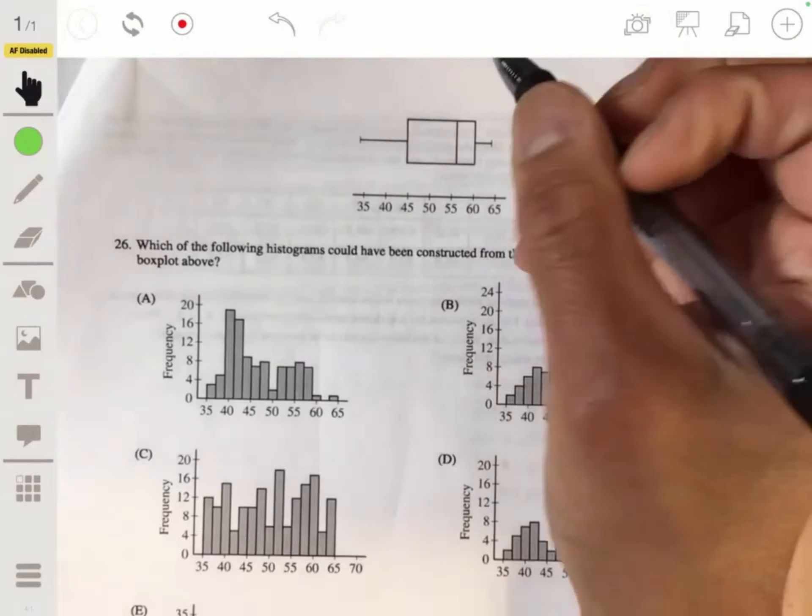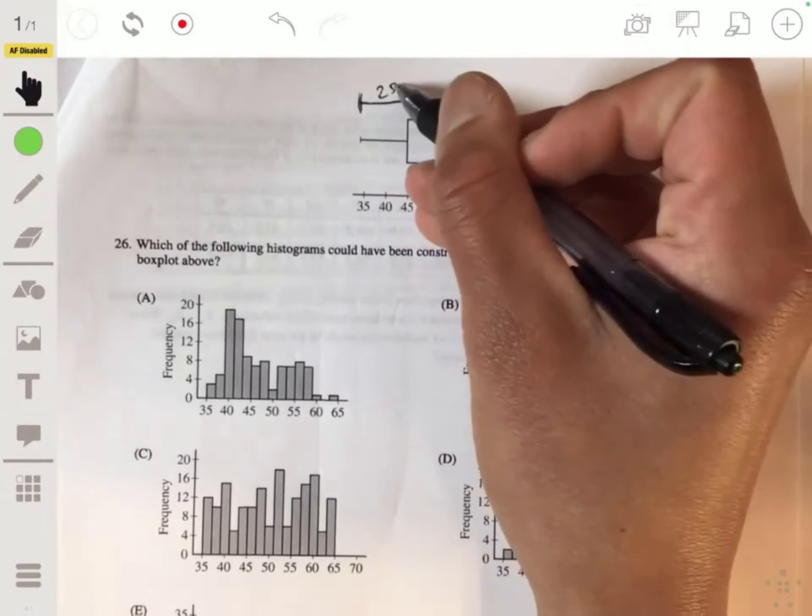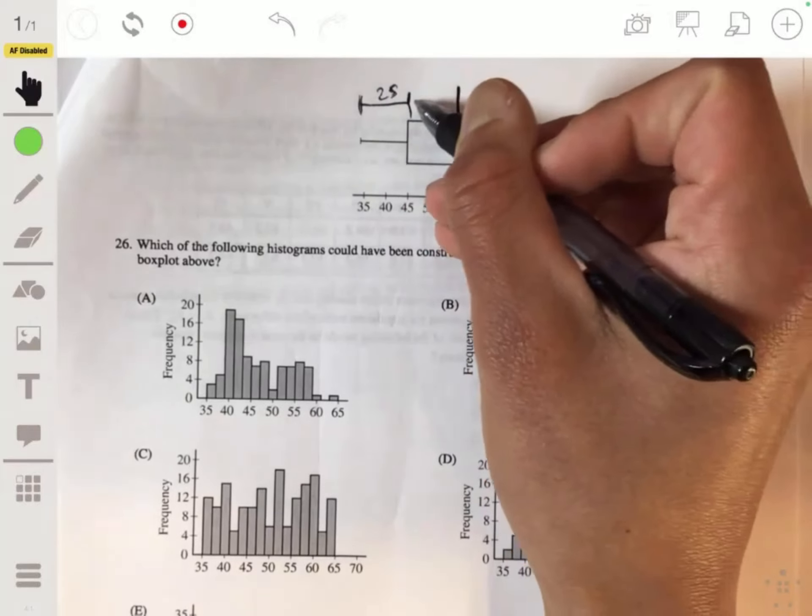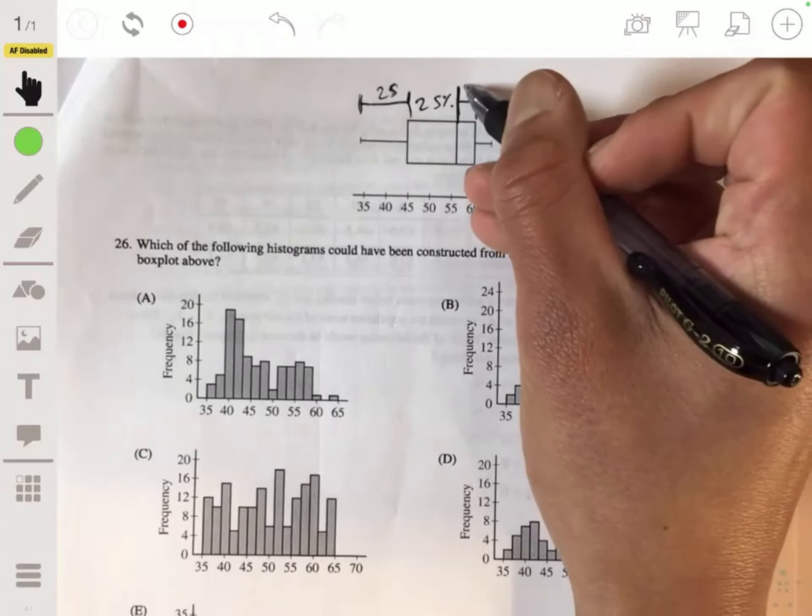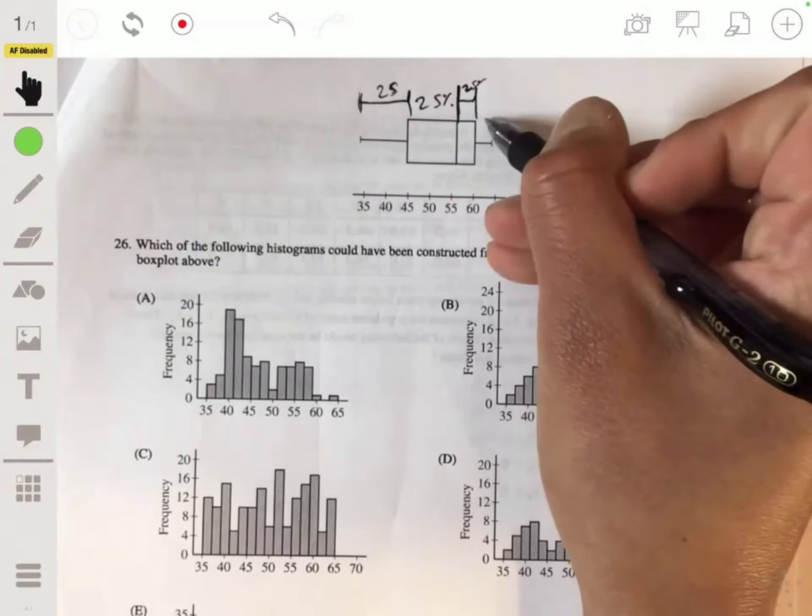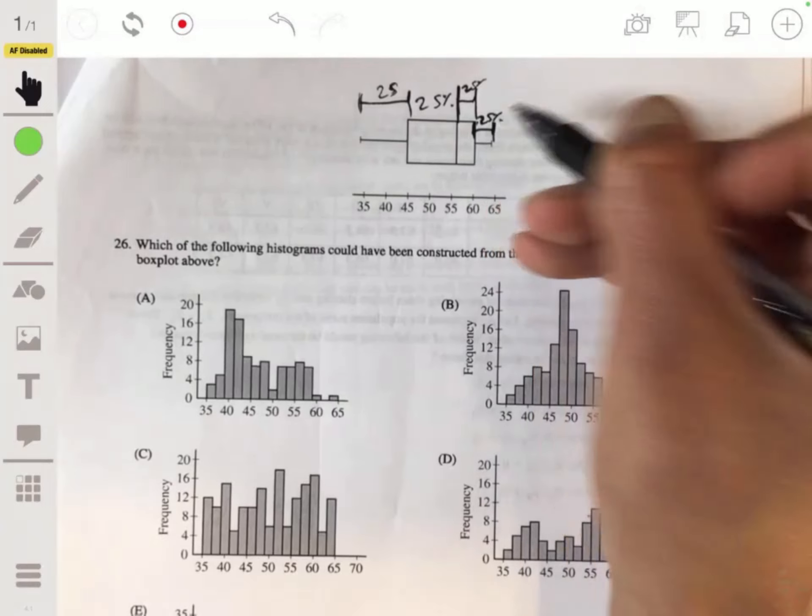Okay, so remember what a box plot is - a box that shows percentages. Right here we've got 25%, then the next 25%, the middle or third 25 percentile, and then the top 25 percentile, or the fourth.